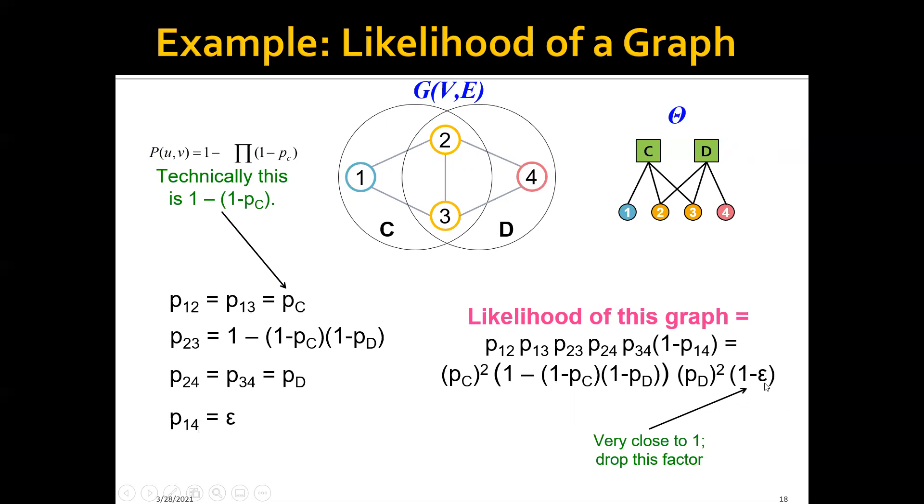And usually this epsilon is very close to 0, therefore this whole term will be very close to 1, and therefore we can drop this factor.